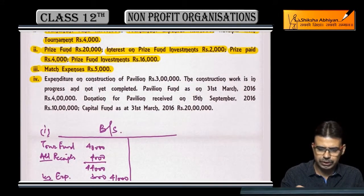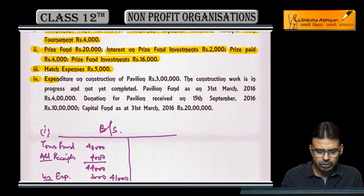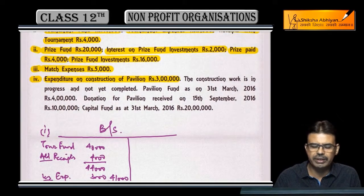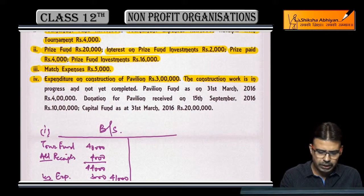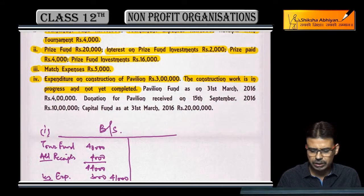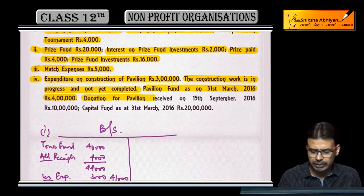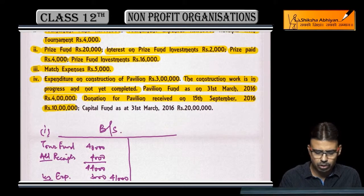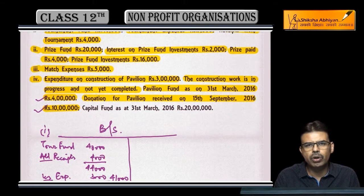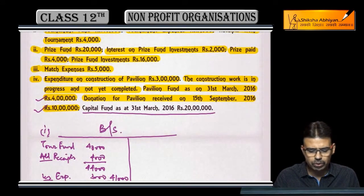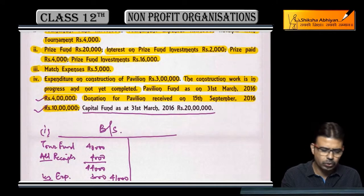Last — point number four: expenditure on construction of pavilion is 3 lakh. Construction work is in progress, not yet completed. Aur pavilion fund diya hua hai 4 lakh (opening balance). Donation for pavilion received during the year: 10 lakh rupee. Capital fund bhi diya hua hai. Capital fund ka kisi bhi cheez se koi link nahi hai; aap isko apni liability side par specifically show kar sakte hain.